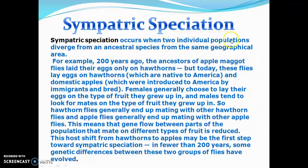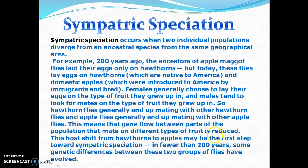Sympatric speciation occurs when two individual populations diverge from an ancestral species within the same geographical area. For example, 200 years ago the ancestor of apple maggot flies laid their eggs only on hawthorns, but today these flies lay eggs on hawthorns native to America and on domestic apples introduced by immigrants. The females generally choose to lay eggs on the type of fruit they grew up on, and males tend to look for mates on the same type of fruit. So hawthorn flies generally mate with hawthorn flies and apple flies with apple flies, reducing gene flow between the two groups. This host shift may be the first step towards sympatric speciation, and in fewer than 200 years some genetic differences between the two groups have evolved.